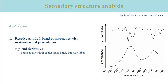As already mentioned, secondary structure analysis is probably the most common application of infrared spectroscopy in the life sciences. A widely used approach for this consists of the following steps. In Step 1, the amide-1 component bands are identified, for example from the minima in the second derivative spectrum. This provides the approximate band positions of the component bands, as indicated by the arrows.